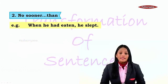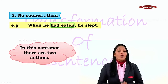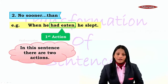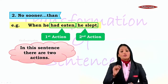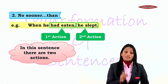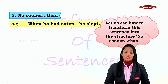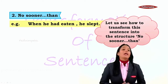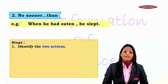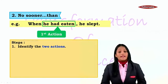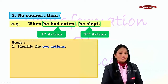The example sentence is: 'When he had eaten, he slept.' The first thing we do is identify the two actions. Here we have 'had eaten' as the first action and 'slept' as the second action. In such a case you can use 'no sooner...than.' The instruction will be given to you students. Now let's see how to transform the sentence using these simple steps.